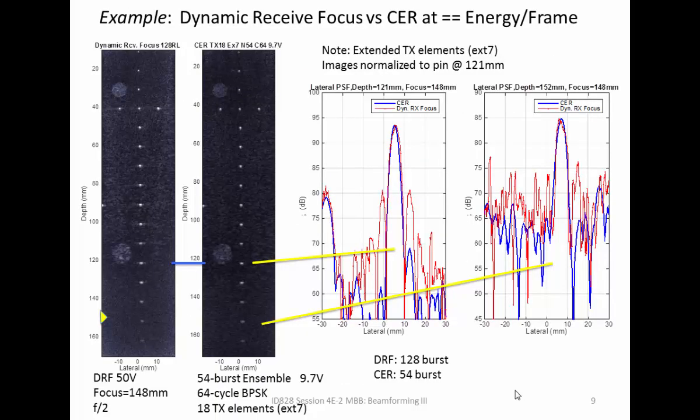To give an example, comparing to dynamic receive focus with 128 scan lines: the coded excitation uses a sparse 18-element transmit aperture, 54 transmissions, 64-cycle-long codes, at nine volts versus 50 volts for the dynamic focus algorithm focused at 148mm. We see pretty much identical main lobe response, but five to eight dB better clutter rejection than the dynamic focus. Going closer in where dynamic receive is out of focus, we're still focusing very well with the synthetic transmit aperture operating on the coded excitation impulse response estimates.